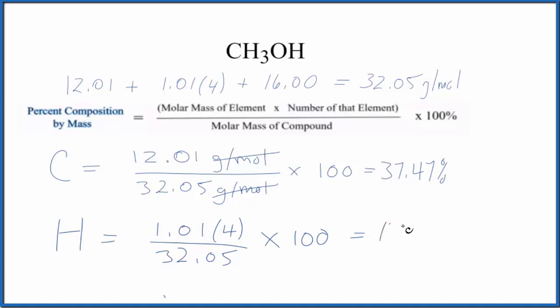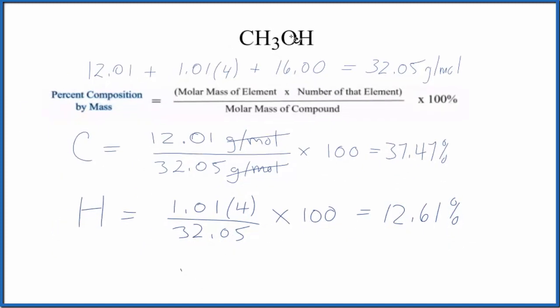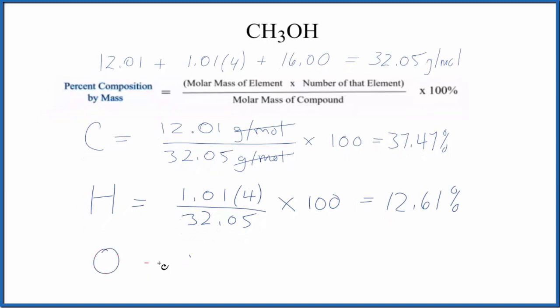For the oxygen, we have one oxygen atom. Oxygen on the periodic table, 16.00 grams per mole, divided by the molar mass of the entire methanol compound there, times a hundred.